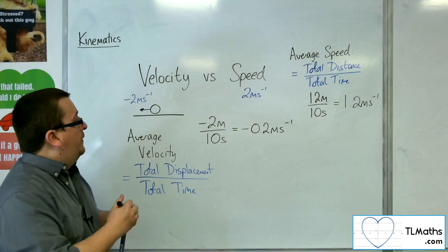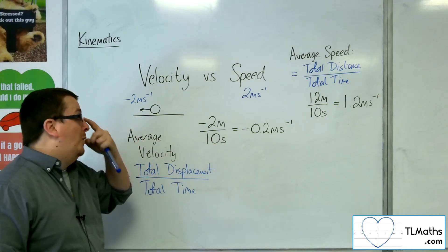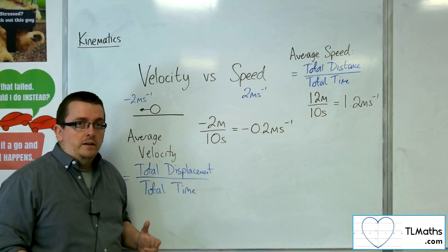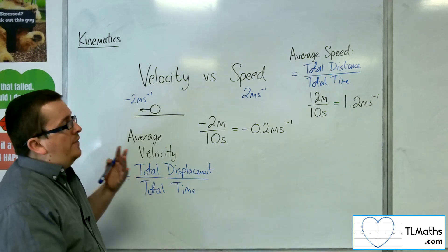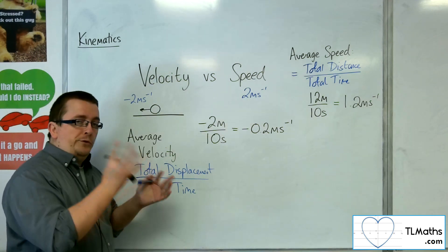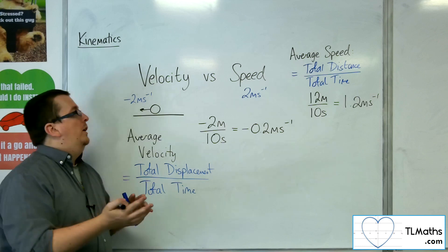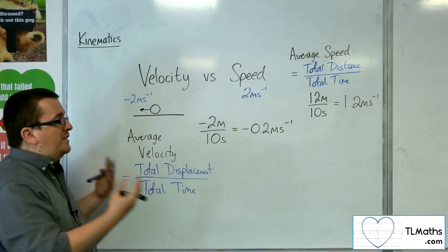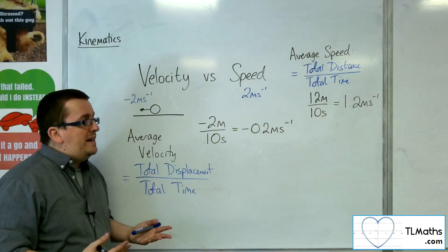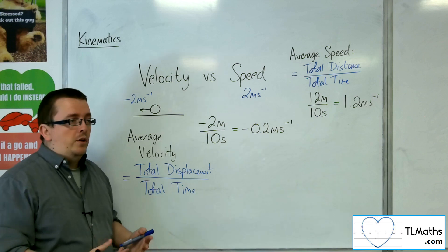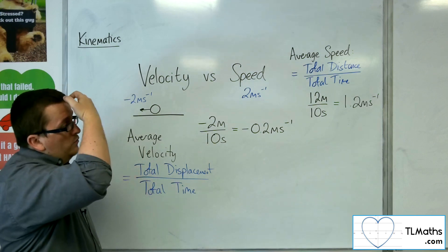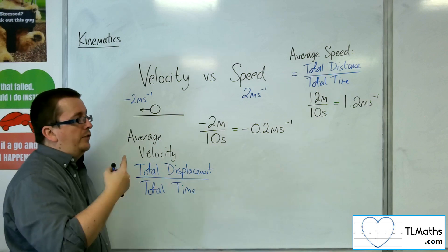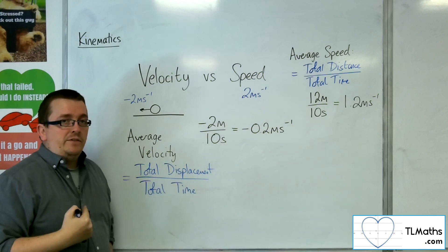Whereas the average velocity was minus 0.2 meters per second. So quite different figures. So you need to get these concepts sorted in your head, thinking about velocity as a vector quantity and speed as a magnitude, as a scalar quantity, rather than one that is looking at positive and negative.